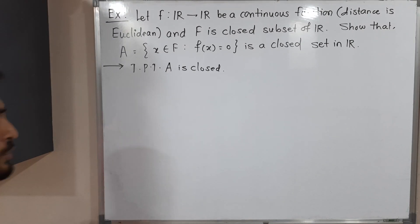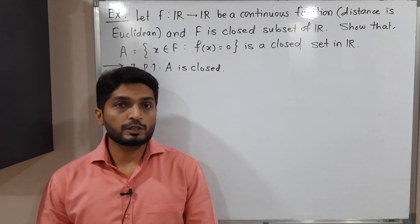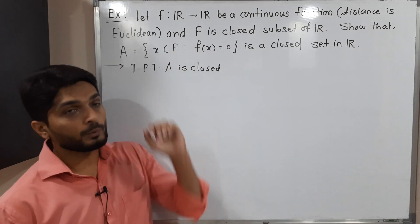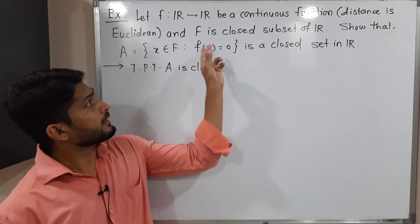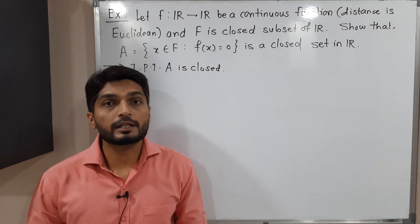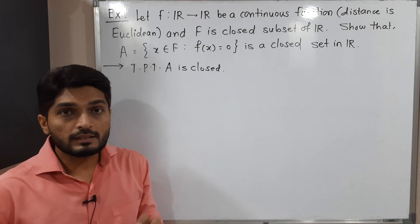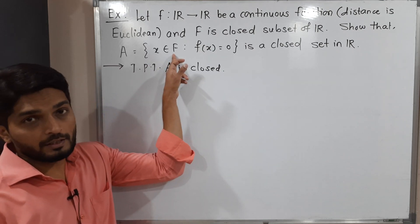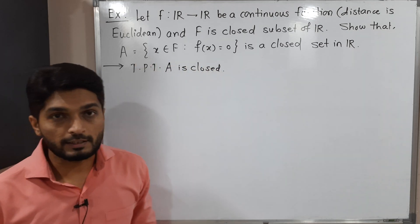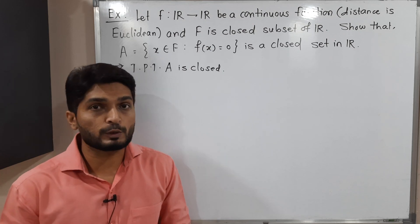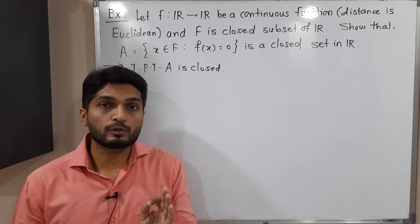In this video we are going to discuss this example. We have a function f from ℝ to ℝ, which is a continuous function. They have given F is a closed subset of ℝ, and one more set A is defined as a subset of F containing elements x of F such that f(x) = 0. We have to prove that A is a closed subset of ℝ.